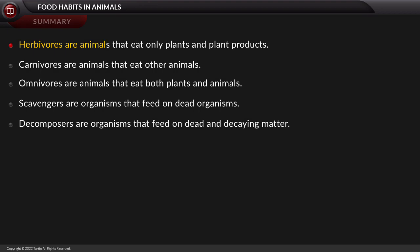Summary: Herbivores are animals that eat only plants and plant products. Carnivores are animals that eat other animals. Omnivores are animals that eat both plants and animals. Scavengers are organisms that feed on dead organisms. Decomposers are organisms that feed on dead and decaying matter.